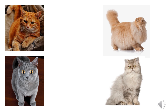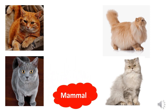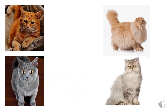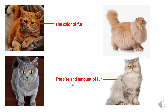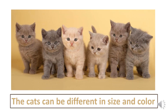Now, how about this animal? This is the cat, of course. It is a mammal. What are the differences between these cats? First, the color of the fur is different. Also, look at the size and amount of fur — the fur on these two is very tall and fluffy, while this one is shorter. So the cats can be different in size and color also.